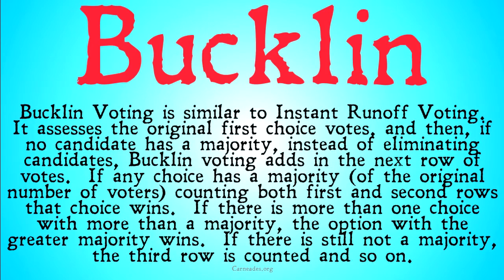Buckland voting is similar to instant runoff voting. It assesses the original first choice votes, and then if no candidate has a majority, instead of eliminating candidates, Buckland voting adds in the next row of votes. If any choices have a majority of the original number of voters casting their vote for that candidate — either their first or second place votes, counting first and second rows — that choice wins.